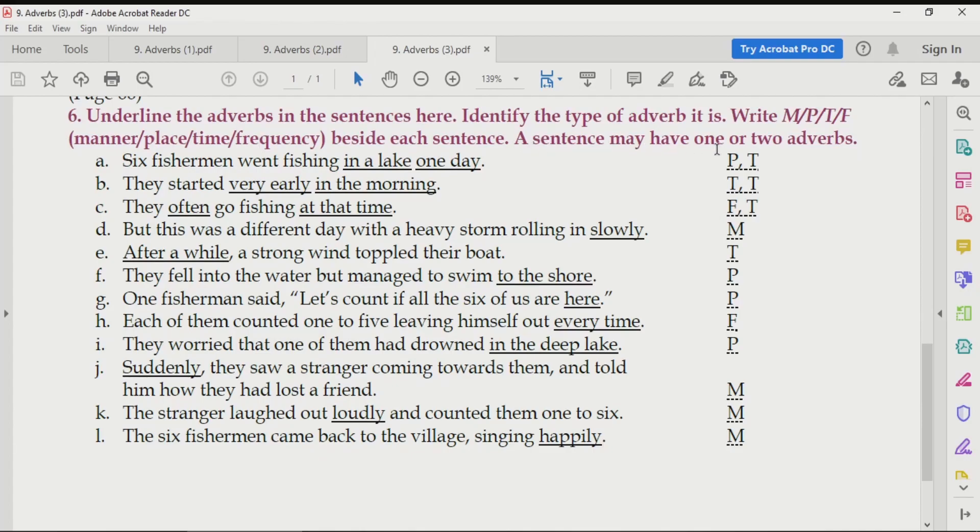As you can see over here, it says a sentence may have one or two adverbs. Dear students, sometimes we also have three or four also in one sentence. But over here, they have made it a bit easier for you. They have given maximum two adverbs. So, we'll begin with the first question. Six fishermen went fishing in a lake one day. Now, dear students, I won't repeat this for all the sentences. But you have to first know which is the main part in the sentence. Over here, we want the main thing that is the verb and the subject. Who is doing what? Over here, our main subject is Fishermen. Now, since we have M, E, N, it is plural. So, we have the number.